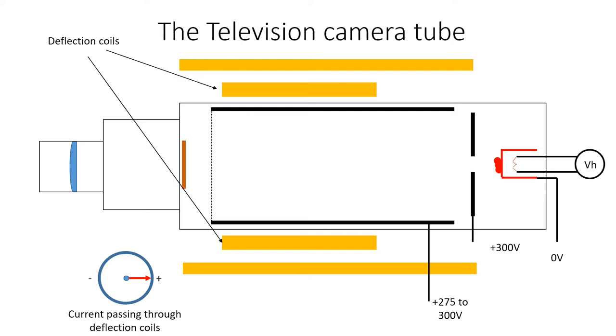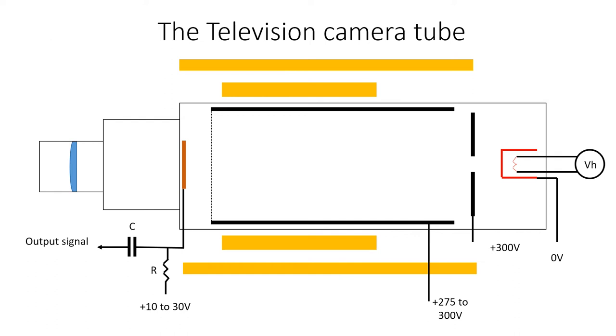The image sensor is connected to a voltage source of between 10 and 30 volts called the target bias via a resistor R. When the electron beam strikes the image sensor, a current flows through the resistor in proportion to the amount of light that the image casts on the sensor at that point. If the image is dark at that point, then only a small current will flow. If the image is light, then a larger current will flow. The resulting video signal is then outputted via a capacitor C.